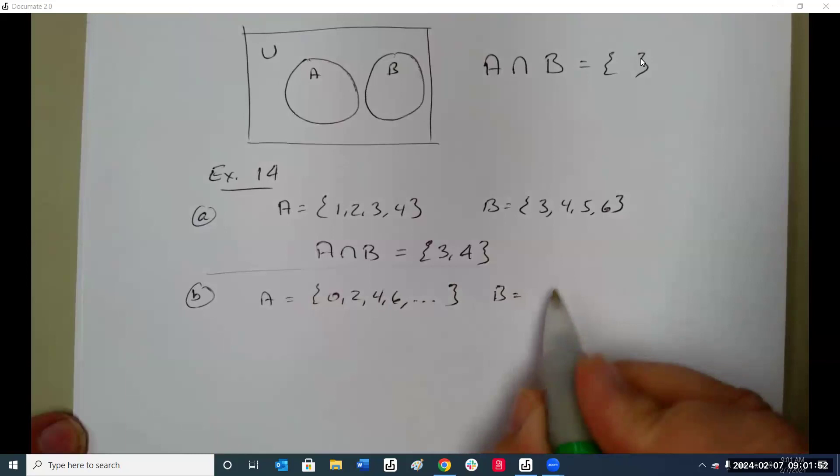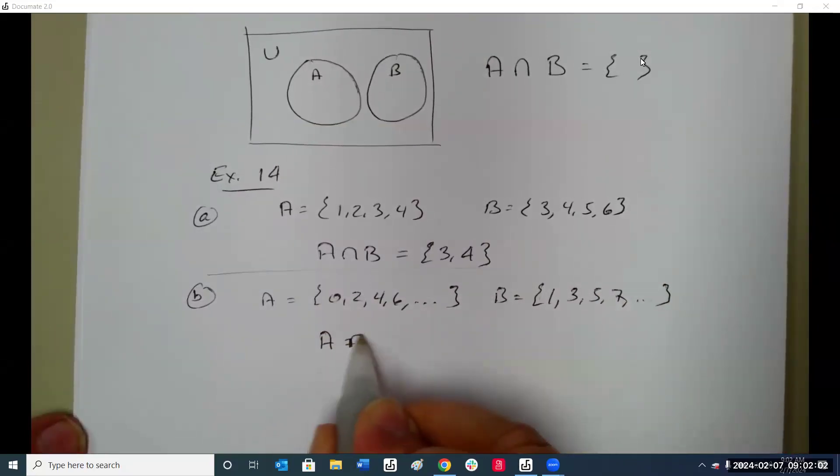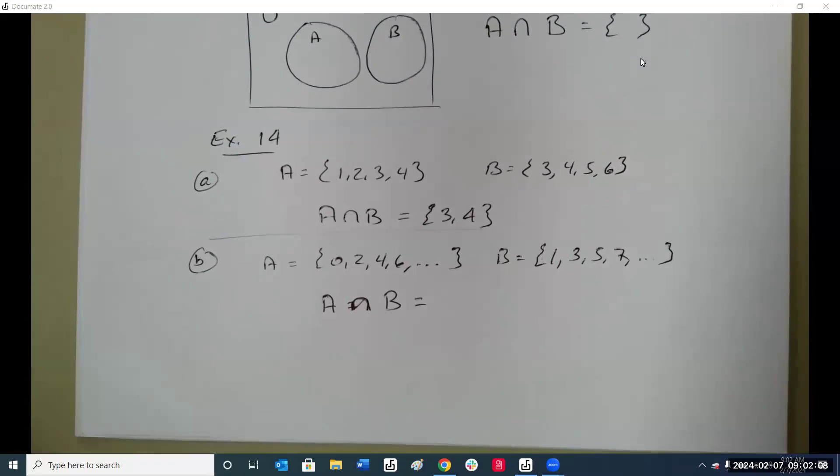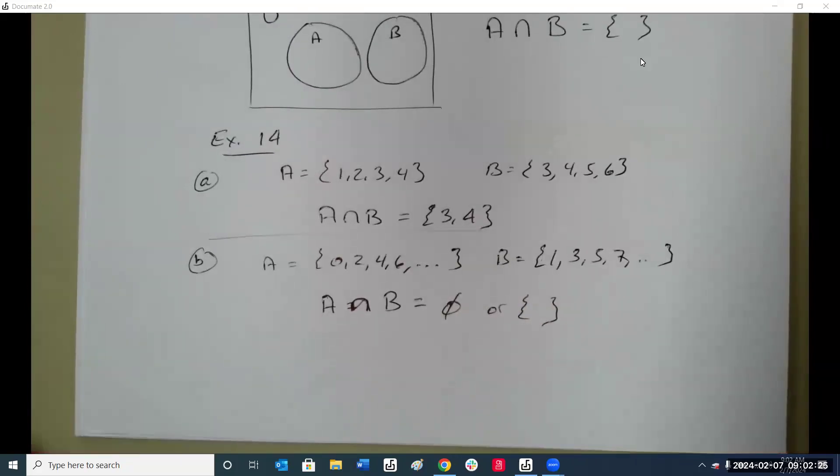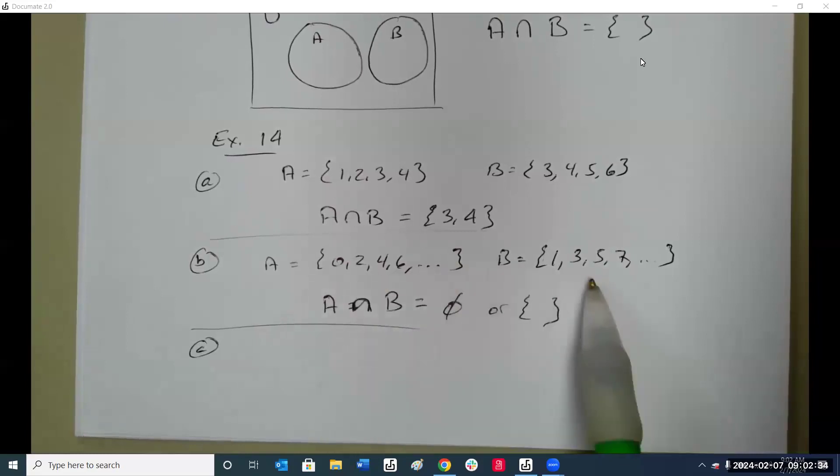A are all the evens including zero. B are all the odds. Where do they overlap? Just the empty set, or you can write just the empty set. Because this one's all evens, this one's all odds, they have nothing in common, so it's an empty set.